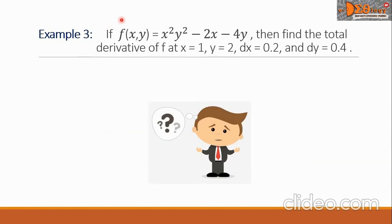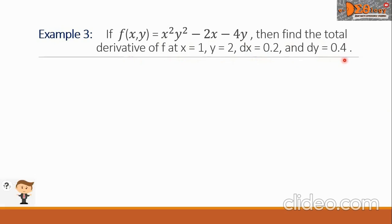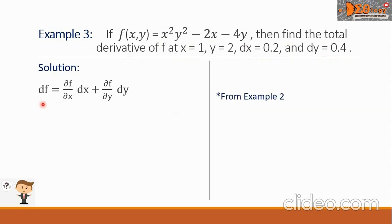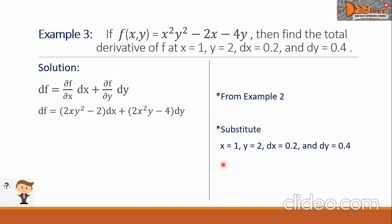Example 3: If f(x, y) equals x squared y squared minus 2x minus 4y, find the total derivative of f at x equals 1, y equals 2, dx equals 0.2, and dy equals 0.4. Let us write the formula for total differential. Note that this function is the same as in Example 2, so we copy the total differential expression. The next step is to substitute x equals 1, y equals 2, dx equals 0.2, and dy equals 0.4.